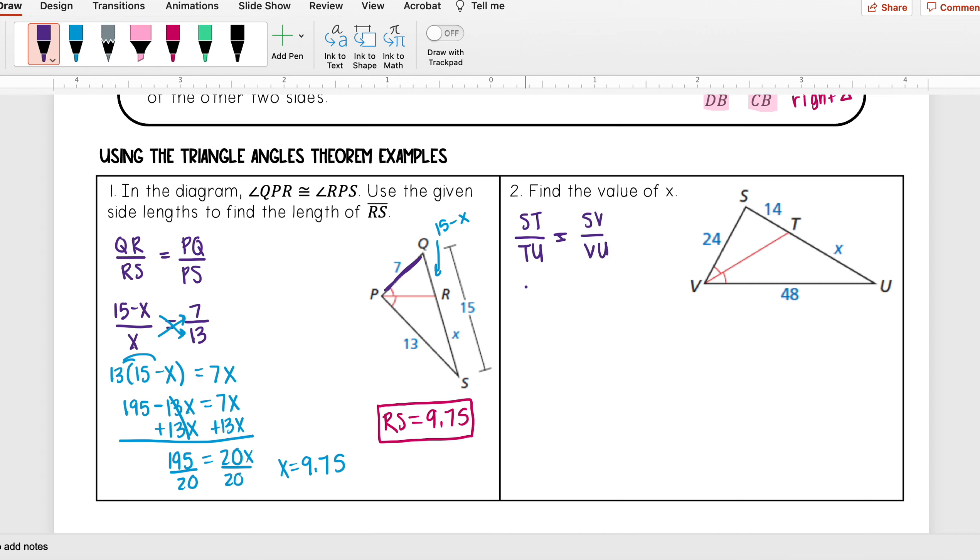ST is 14, TU is x, SV is 24, and VU is 48. And now that I have my proportion, I go ahead and cross multiply, so x times 24, I get 24x. It's equal to 14 times 48, which is equal to 672. And then I can divide both sides by 24. And I get that x is equal to 28.